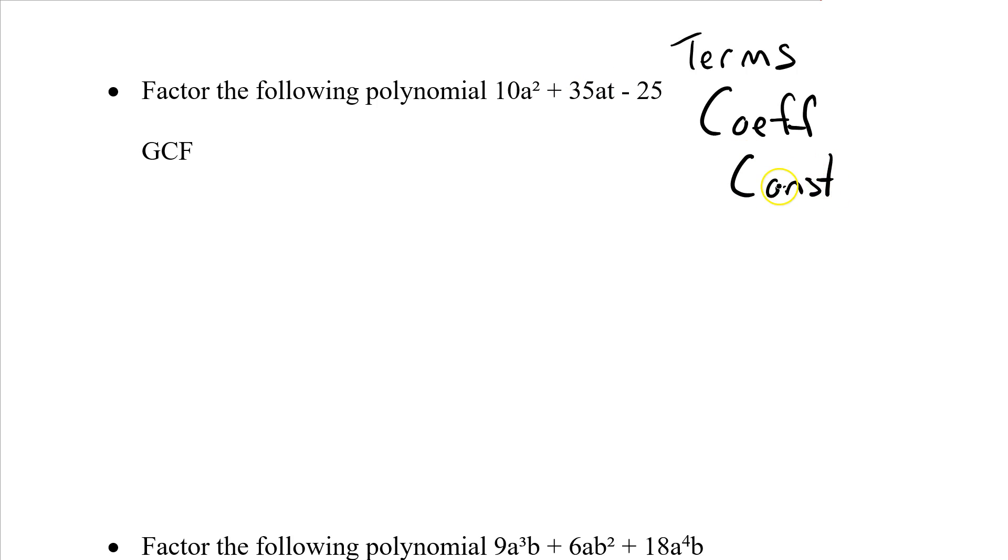This is a three-term polynomial, so we call it a trinomial. I'm just thinking about this stuff to make sure I understand what's going on with the polynomial. So let's start factoring this using the greatest common factor. Again, take the first term 10a², the second term 35at, and the third term negative 25, but I'm going to ignore that negative for a sec and write down just 25.